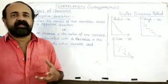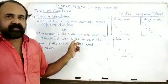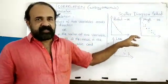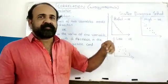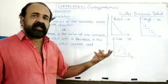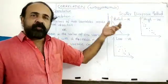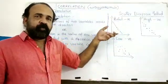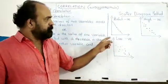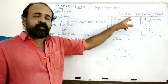We can identify negative correlation using a scatter diagram. This is a graphical method to check and analyze correlation. We plot points on the x-axis and y-axis and examine the scatter. This gives us the negative correlation.